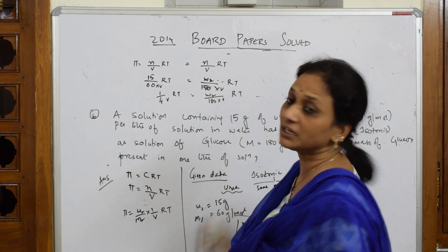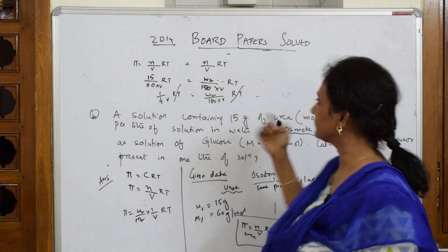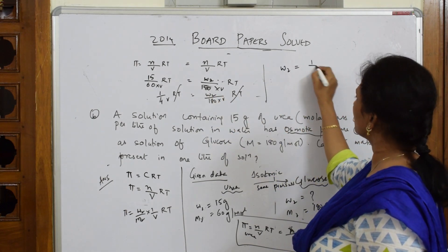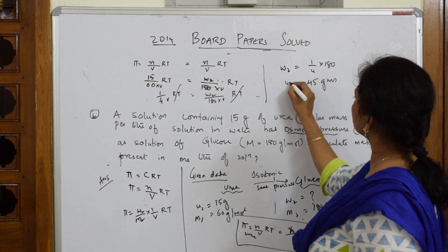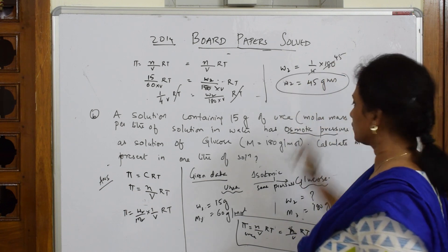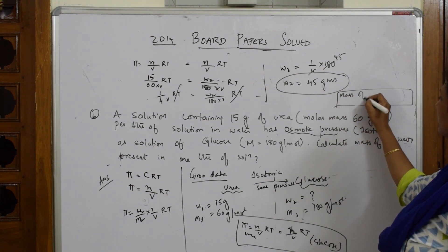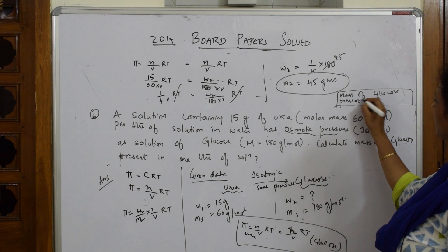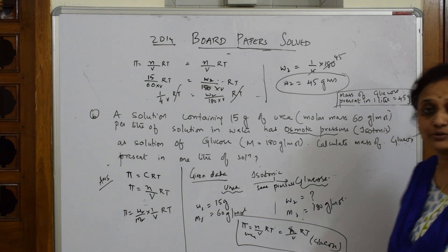RT cancels out, and V cancels out, since we are just calculating the masses. So w₂ = 1/4 × 180 = 45 grams. Therefore, mass of glucose present in 1 liter of solution = 45 grams. Put this in a box as your final answer.